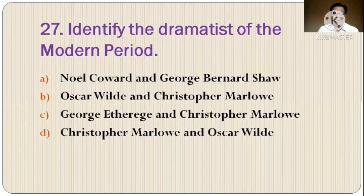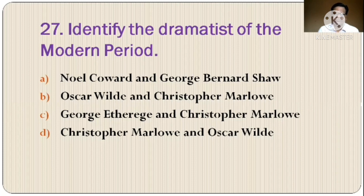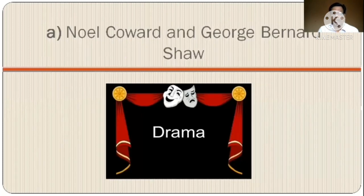Question 27: Identify the dramatists of the modern period. The options are: A) Noël Coward and George Bernard Shaw, B) Oscar Wilde and Christopher Marlowe, C) George Atherch and Christopher Marlowe, D) Christopher Marlowe and Oscar Wilde. The correct option is option A, Noël Coward and George Bernard Shaw.